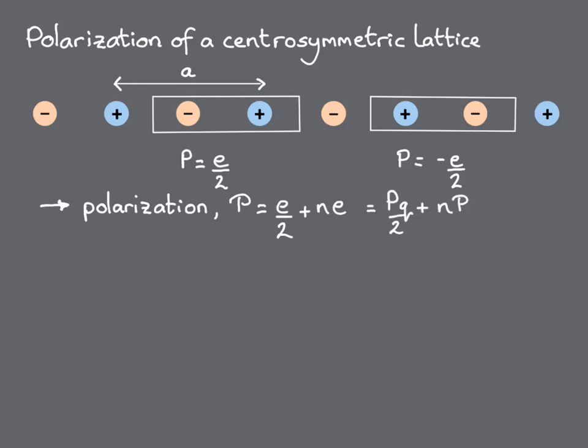The polarization quantum, Pq, is equal to e in this case. Remember, it's defined to be the electronic charge times the lattice vector divided by the unit cell volume, or the unit cell length in one dimension. So we can write the allowed values of the polarization as Pq/2 + n×Pq, where again n is any positive or negative integer.